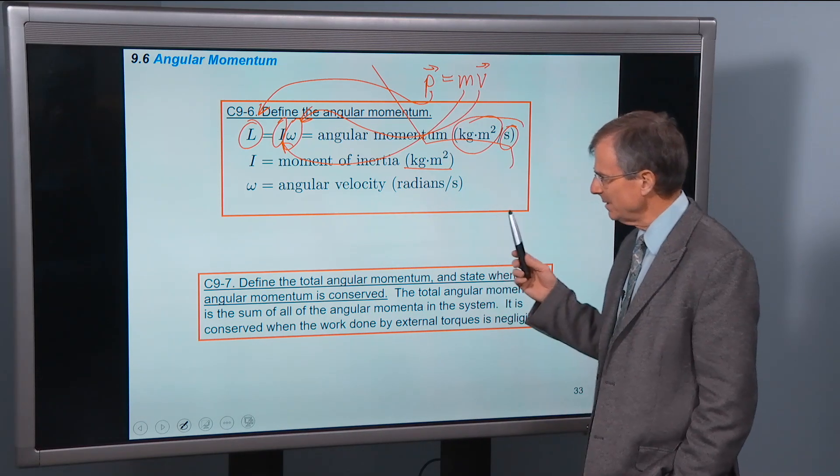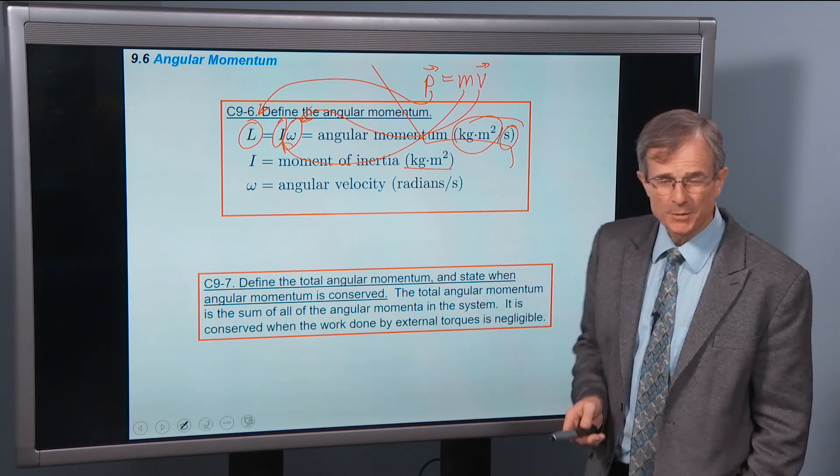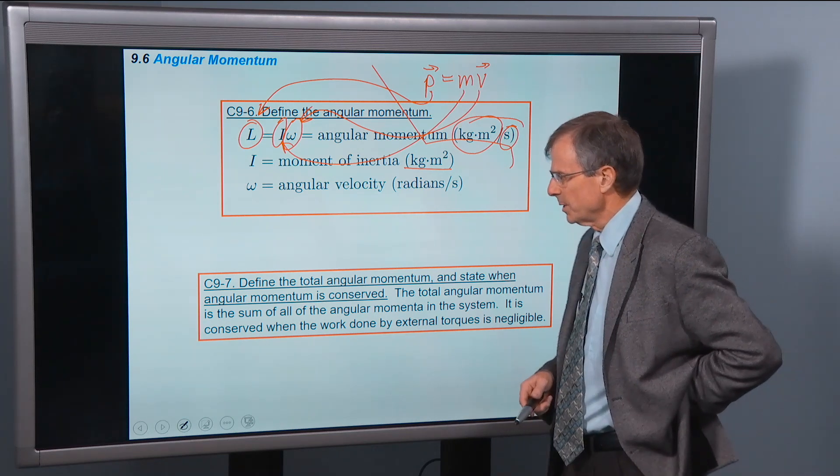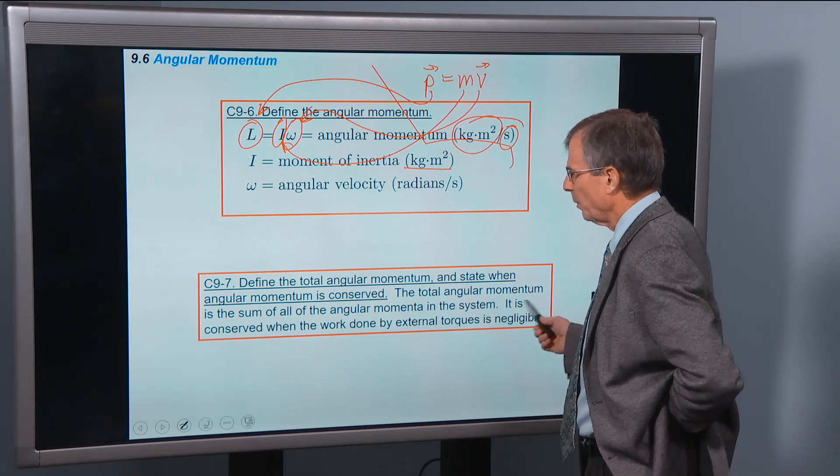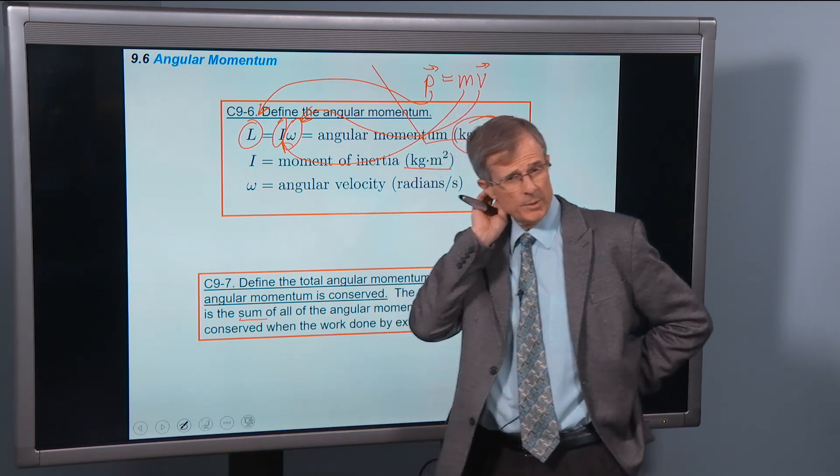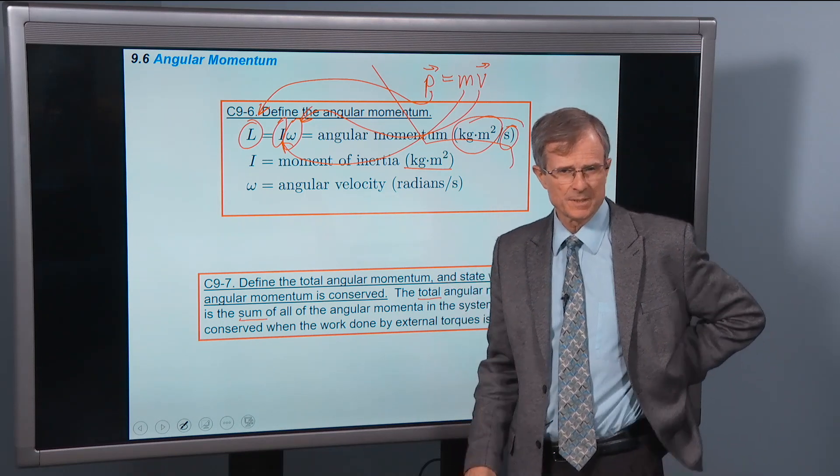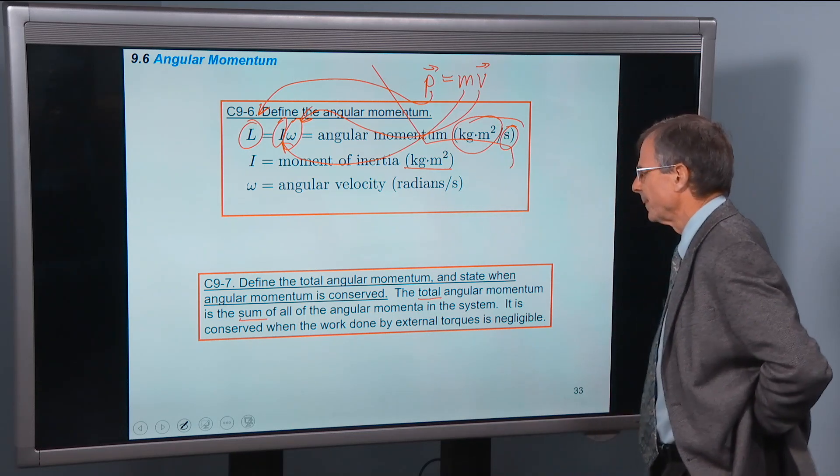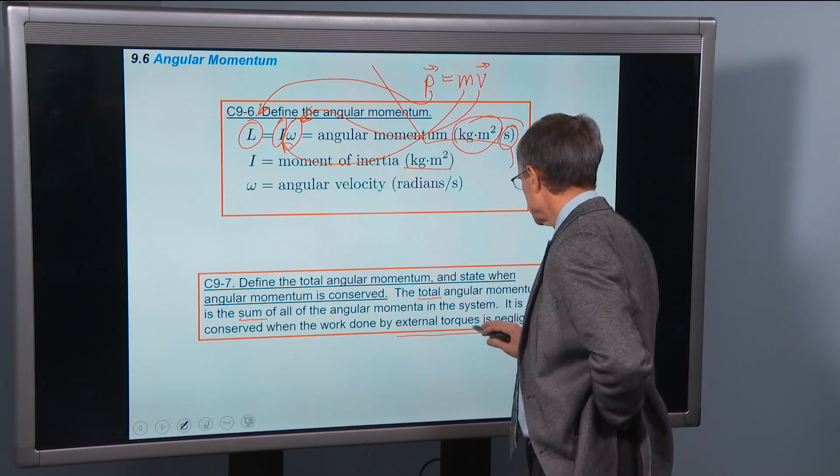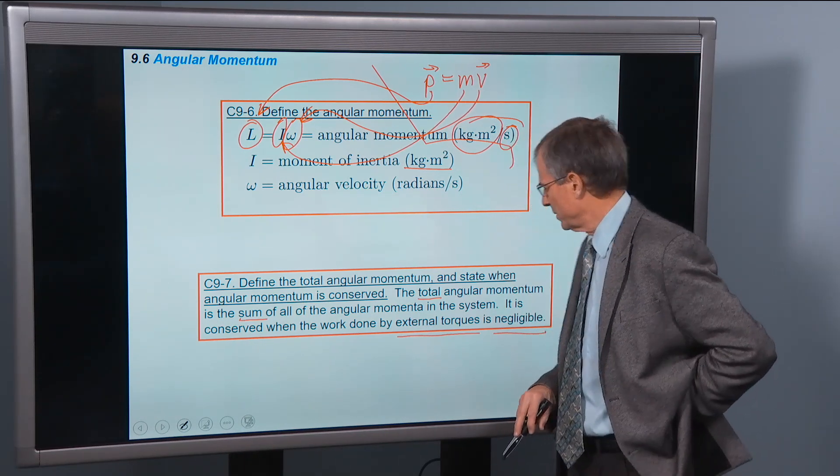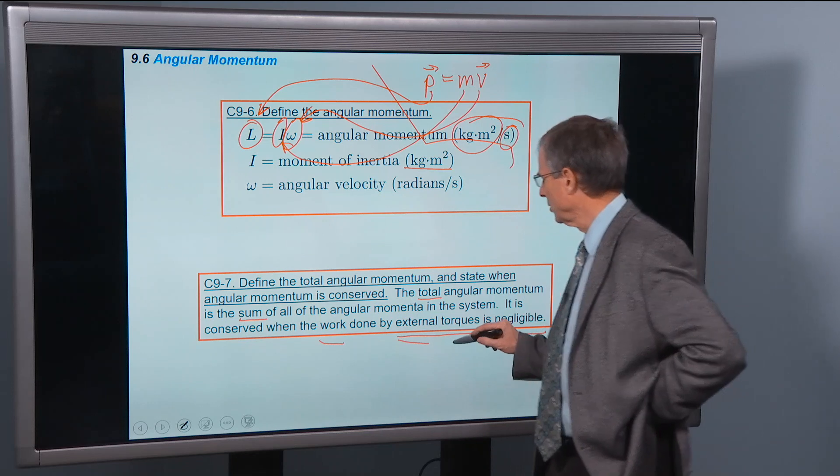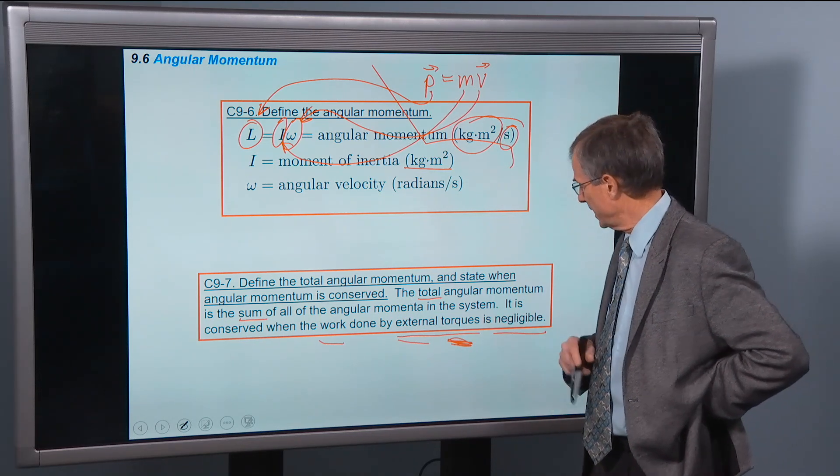is the total angular momentum. A couple of chapters ago we talked about total linear momentum. Now we're talking about total angular momentum. And we're asking a question about when angular momentum is conserved. The total angular momentum is the sum of all the angular momentum in the system. So the total is just the sum. In the same way we define the total linear momentum as the sum of all the momentum in the system. And that total is conserved, the total angular momentum is conserved when the work done by external torques is negligible.